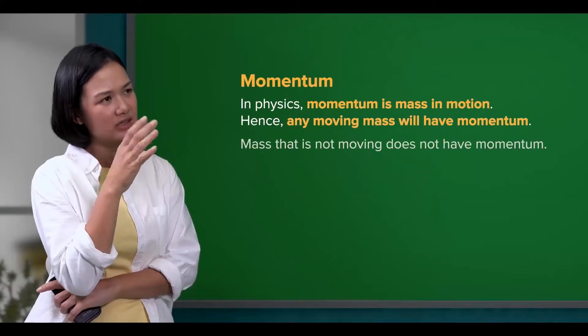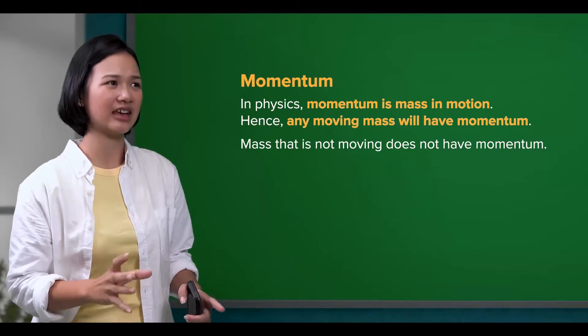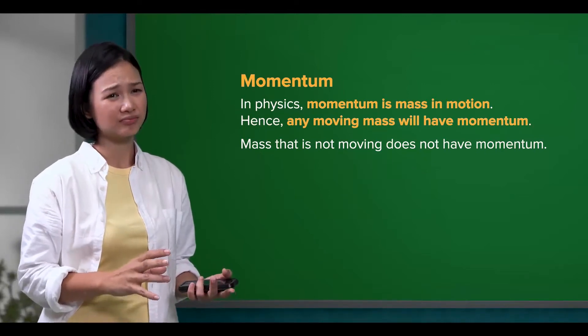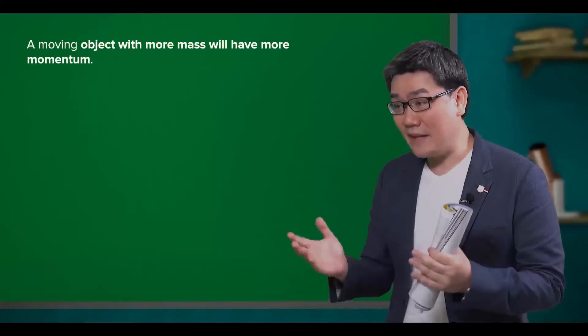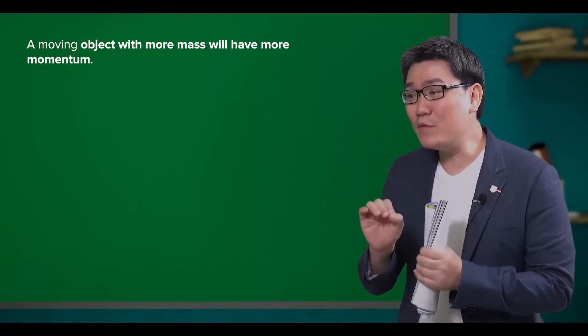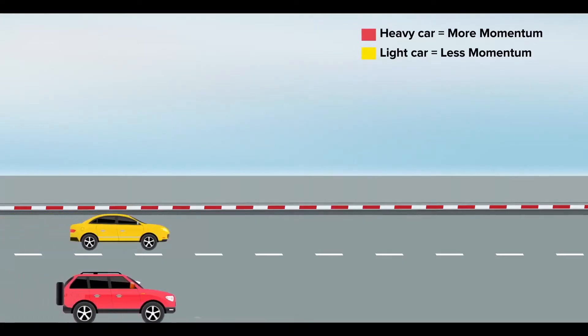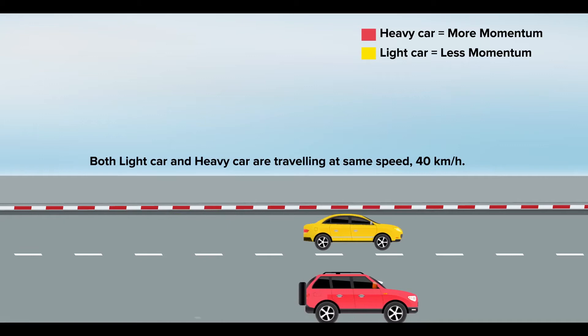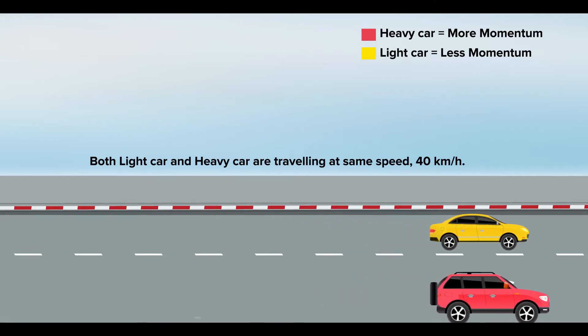That means any mass that is not moving does not have momentum? Indeed. So, a moving object with more mass will have more momentum. Similarly, a faster moving object will have more momentum compared to a slower moving object.